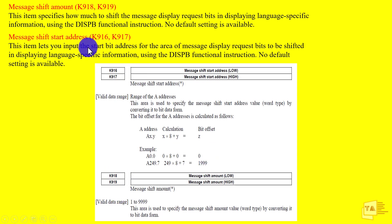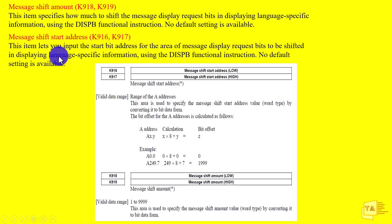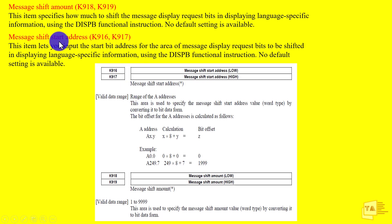This item lets you input the start bit address for the area of message display request bits to be shifted when displaying language-specific information. This information is requested from here — click the number.